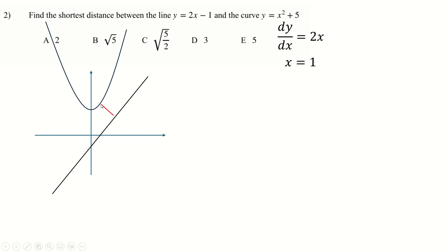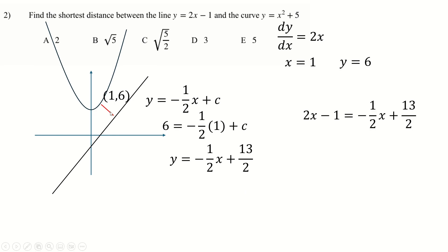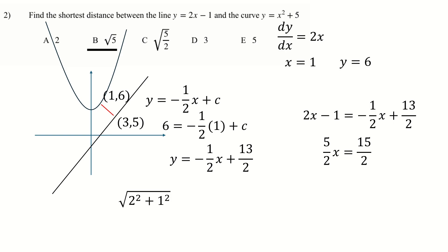Substituting x = 1 gives the point (1, 6) on the curve. We then find the red perpendicular line: gradient minus 1/2 since it's normal to both line and curve at that point. Putting in (1, 6) gives us c, then setting that equal to the original line finds the intersection at x = 3, y = 5. The distance between (1, 6) and (3, 5) is √(2² + 1²) = √5.